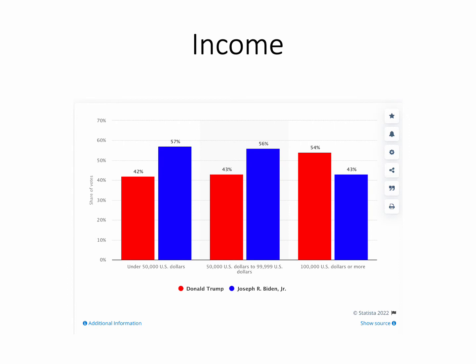Income is another intriguing factor. With voters under $50,000, Biden won decisively. With voters making between $50,000 and $100,000, Biden won that group too. But look at what happened with those over $100,000 — Trump won those. So there's basically a linear relationship: if you're below $100,000 you're most likely to vote for Biden; if you're above $100,000, you're more likely to vote for Trump.